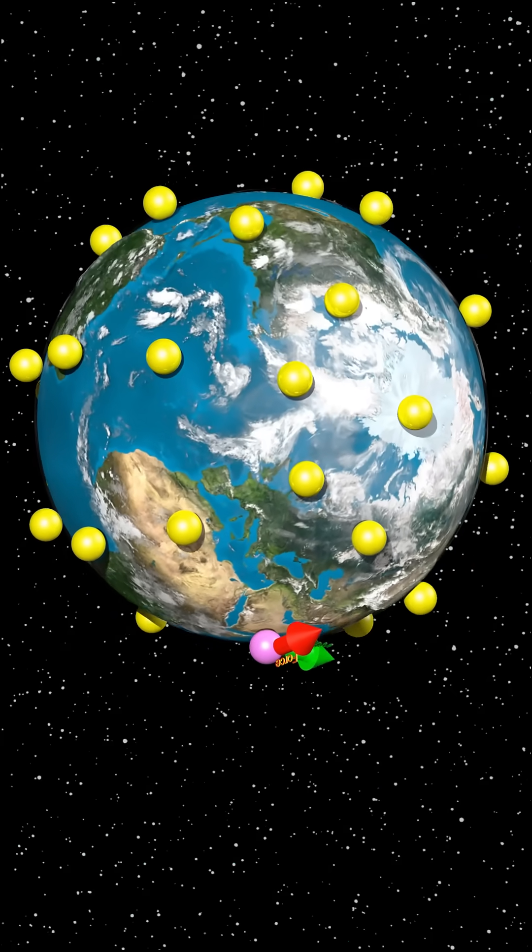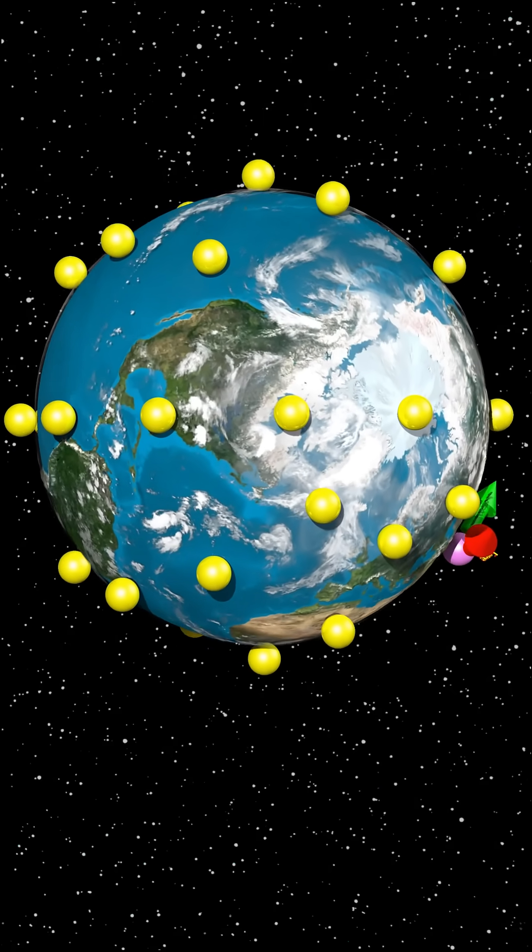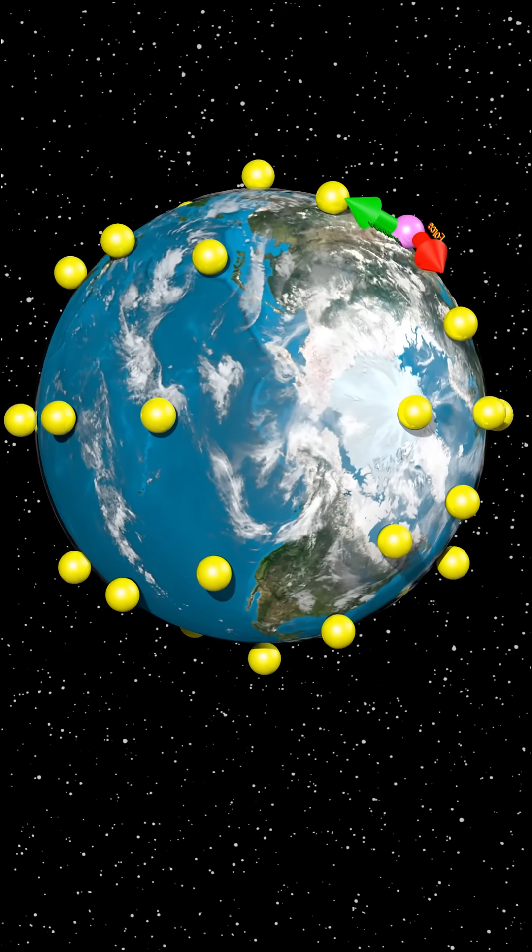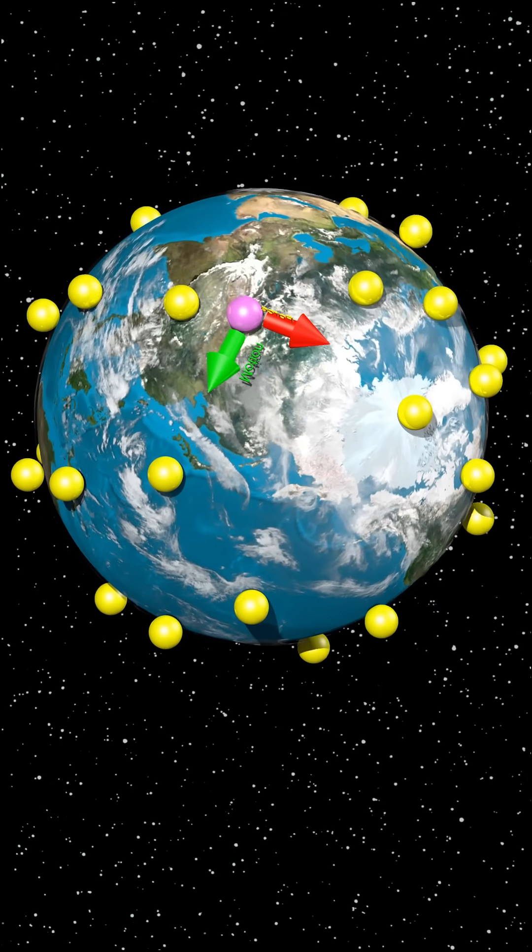If we apply a force away from the equator, the first law of motion will want the sphere to keep moving around the Earth faster than the other spheres.